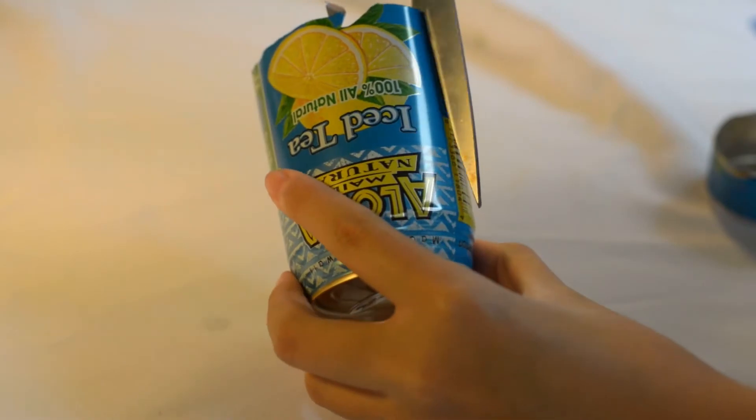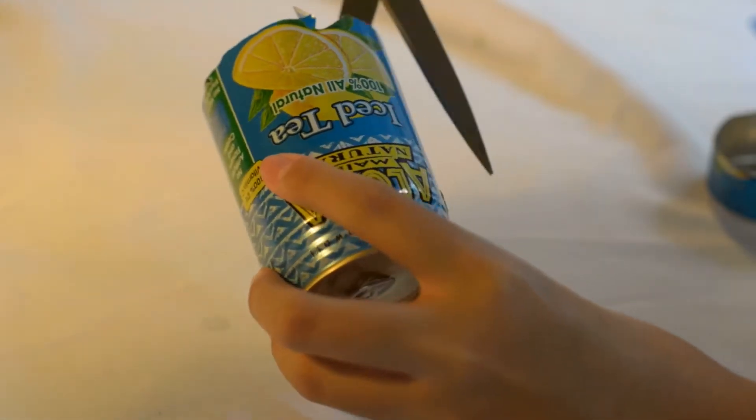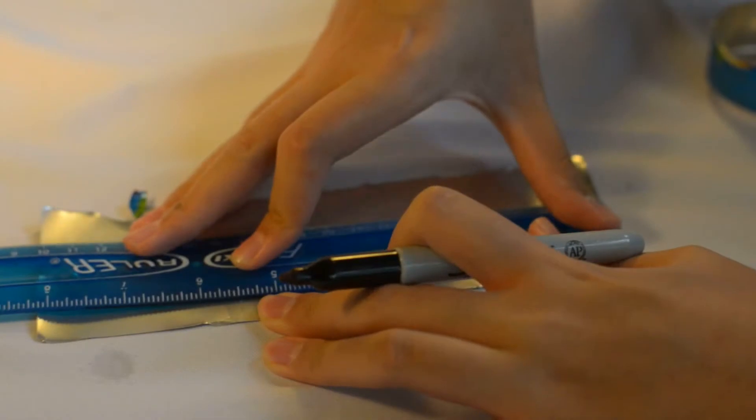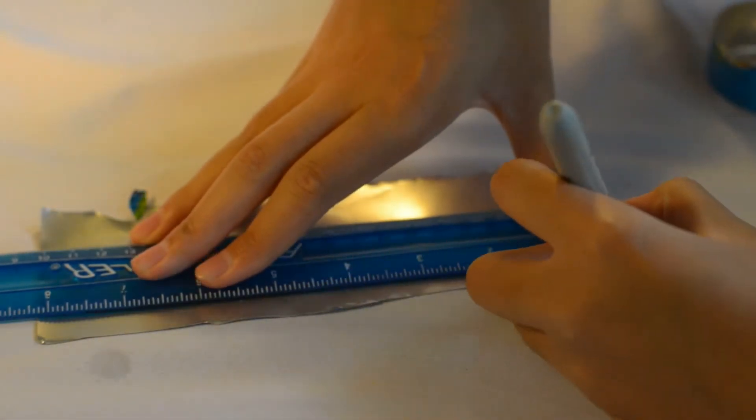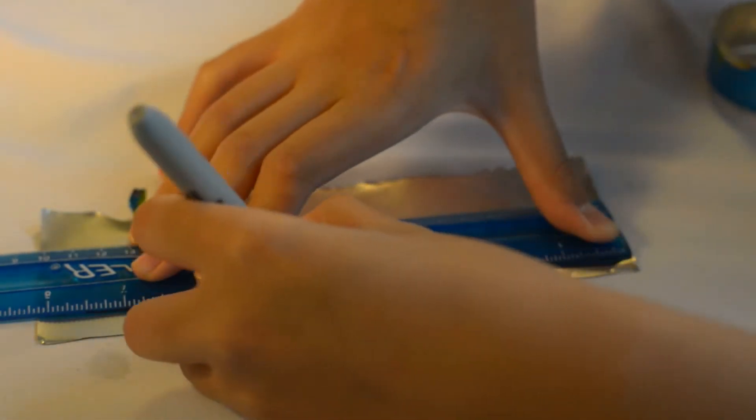The final piece you need to make is the middle wall. Mark one and a half inch by seven inch rectangle and cut it out using scissors.